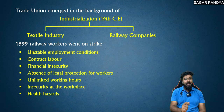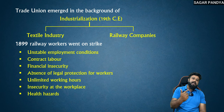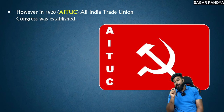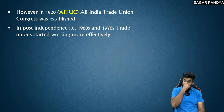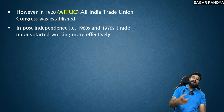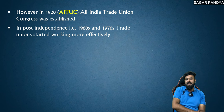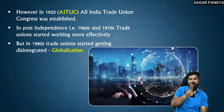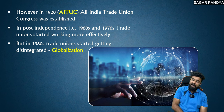So since all of this was happening, they made these demands. To secure these demands, in 1920 the trade union movement was formalized. In the post-independence period, in the 1960s and 70s, trade unions started working more effectively. But in the 1980s, the trade unions started getting disintegrated — divided — due to globalization, and slowly and gradually their importance began to diminish. But even today these trade unions exist and they are working for the rights of the workers.